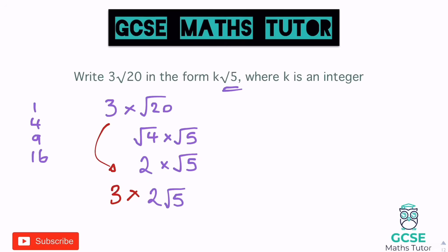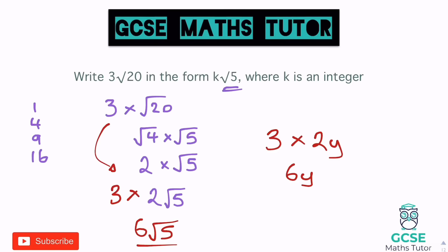Linking back to algebra: if we had 3 lots of 2y, that would become 6y. Using the same logic, 3 lots of 2 root 5 becomes 6 root 5. So 6 root 5 is our final answer.